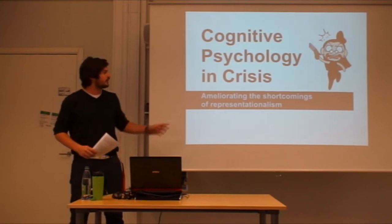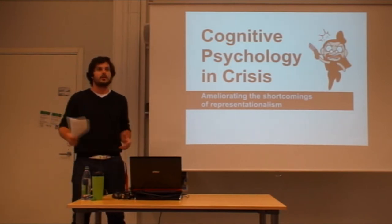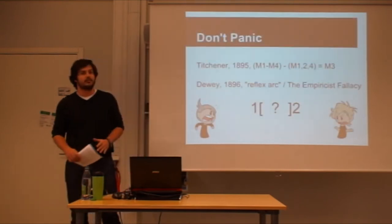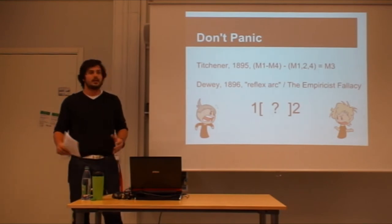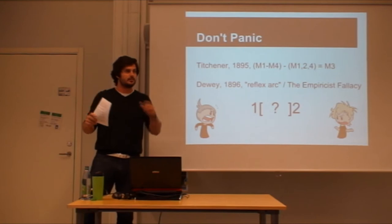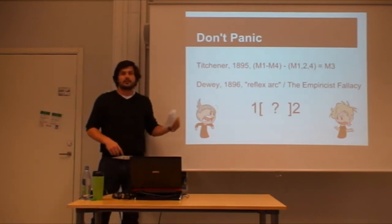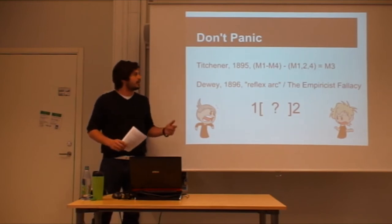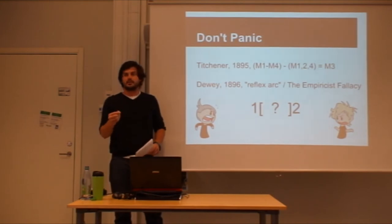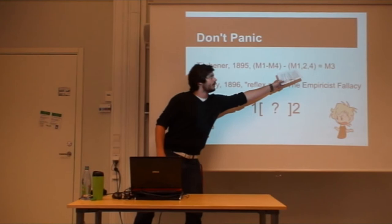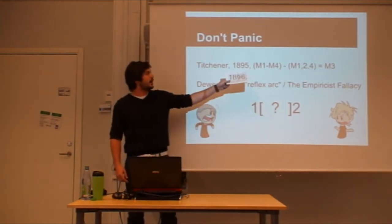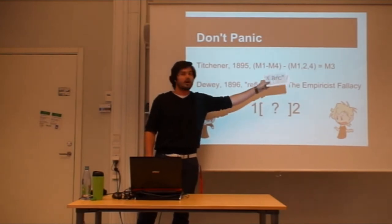Cognitive psychology in the traditional sense uses representations to explain a lot of the brain's processes and our behaviors. Already in 1895, a guy named Titchener proposed that the way things work inside us is through a linear process where processes are separated and isolated from each other. He made the example of a simple reaction time task, where he had a baseline that supposedly went through mental processes 1, 2, 3, and 4, and then he added a decision to that task. He reasoned that if you take the times and subtract them, you get the time taken to actually make a decision.